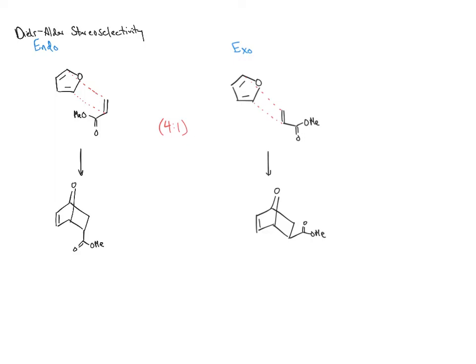To explain endo selectivity, we consult molecular orbital diagrams. In a normal Diels-Alder reaction, we pair the HOMO of the diene with the LUMO of the dienophile. The HOMO of the diene has large lobes on the outsides and one phase change between C2 and C3.